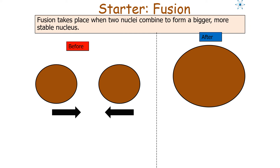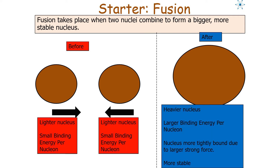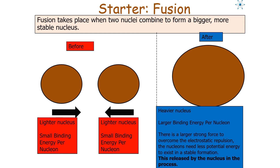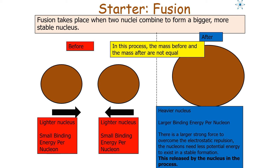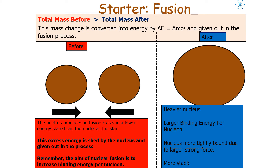Fusion takes place when two nuclei combine to form a bigger, more stable nucleus. Beforehand you have two lighter nuclei with a smaller binding energy per nucleon, and afterwards you have a heavier nucleus with a larger binding energy per nucleon. The nucleus is more tightly bound by the larger strong force, so it is more stable. There is a larger strong force to overcome the electrostatic repulsion, so the nucleons need less potential energy to exist in a stable formation. This energy is released from the nucleus, and the total mass of the two smaller nuclei before is greater than the mass of the one nucleus afterwards — this mass change is converted into energy by ΔE = Δmc².